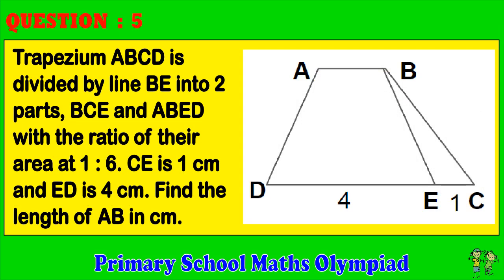Question 5. Trapezium ABCD is divided by line BE into 2 parts, BCE and ABED, with the ratio of their area at 1 to 6. CE is 1 cm and ED is 4 cm. Find the length of AB in cm.